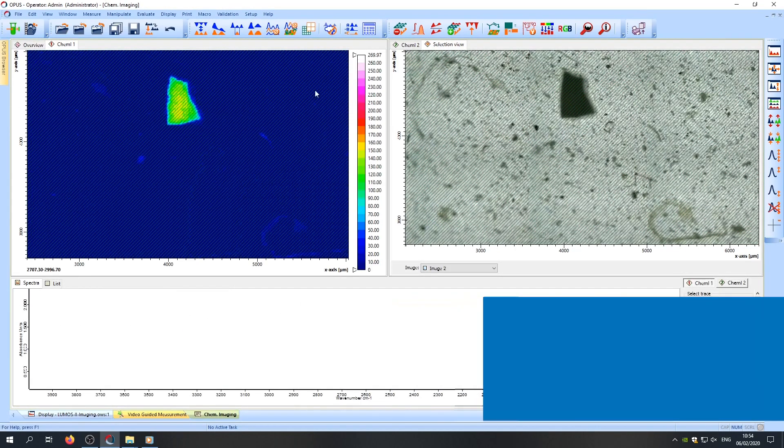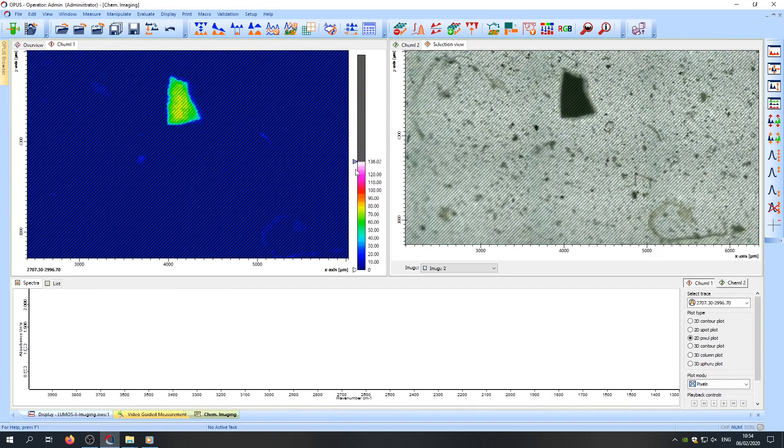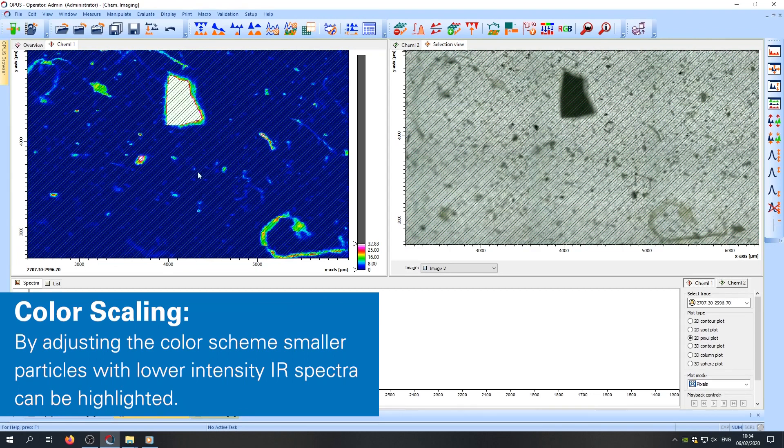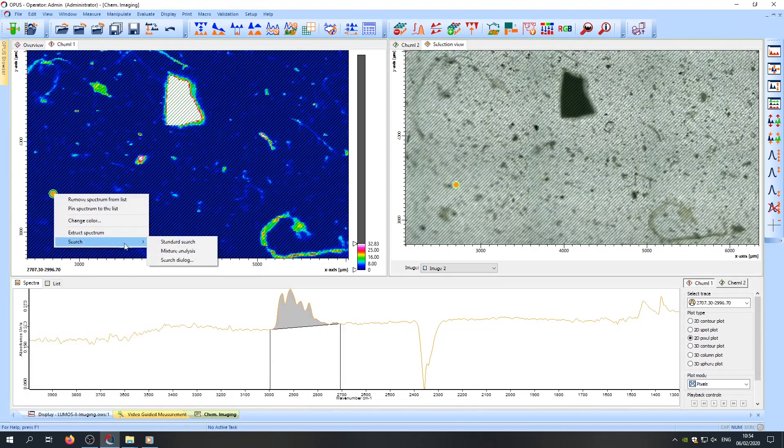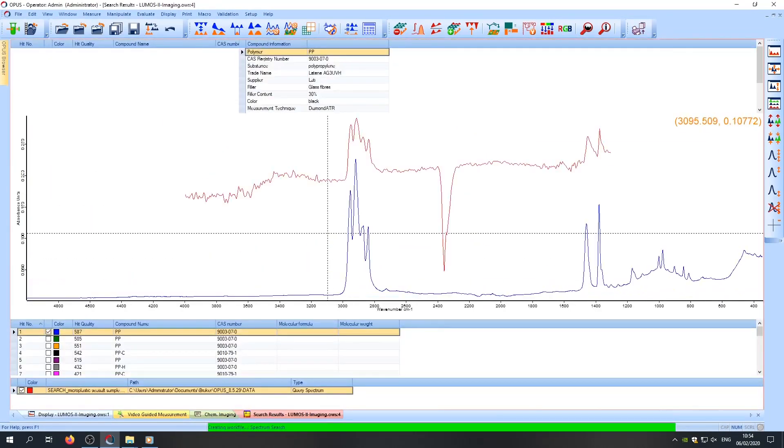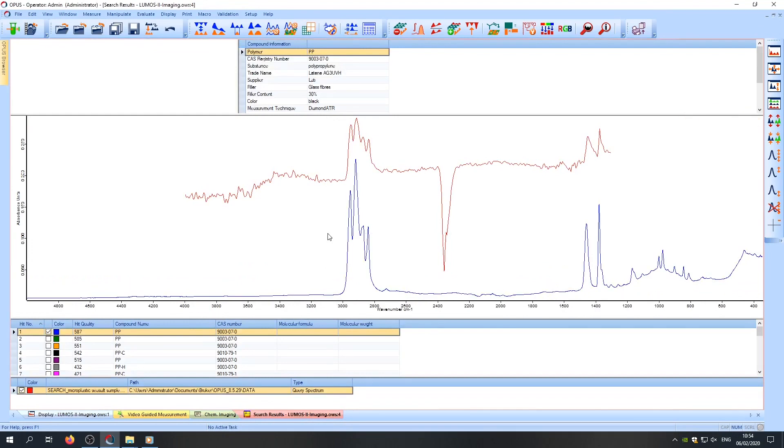If we now want to see smaller particles, we just decrease the color scale and we will see that there is a lot more. And again, just by clicking on the particle, we are shown the spectrum and to find its identity, we perform a library search. And in this case, the particle was identified as polypropylene.